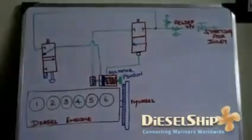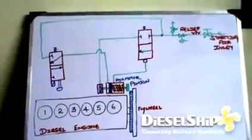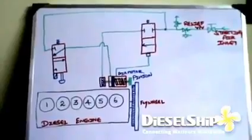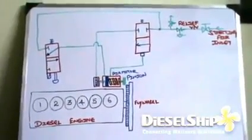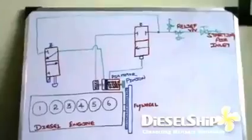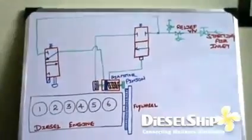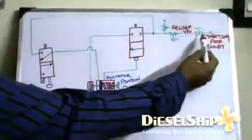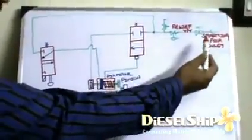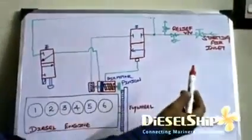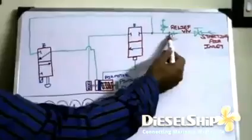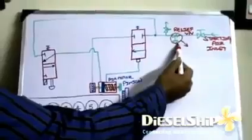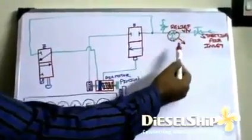This is a simple air starting circuit for a four-stroke engine or a small engine which is having air motor for starting. Let's now understand the basic simple circuit. Here we have the starting air inlet, usually 30 bar from the air motor, and depending on the size of the engine we have a pressure reducing valve. This is just optional, so this valve depends on the engine size, may be there may not be there.